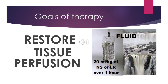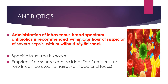One of the main goals of therapy is to restore tissue perfusion. After giving antibiotics in the first hour, you must maintain tissue perfusion — especially in the event of hypotension or serum lactate <4 mmol/L, give a minimum of 20 mL/kg crystalloid. If the woman has persistent hypotension despite fluid replacement, or lactate >4 mmol/L, ICU input is needed to maintain CVP >8 mmHg and central venous oxygen saturation >70%. Intravenous broad-spectrum antibiotics are recommended within one hour of suspicion of severe sepsis, and should be specific to source if known, or empirical until culture results allow narrowing.